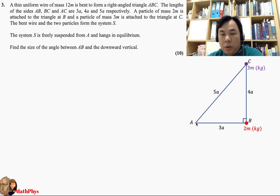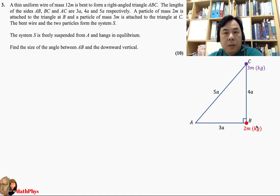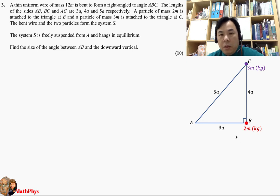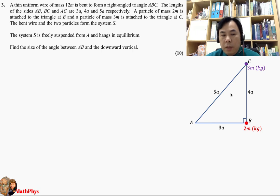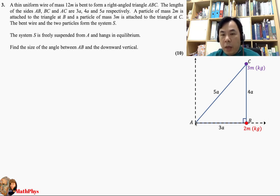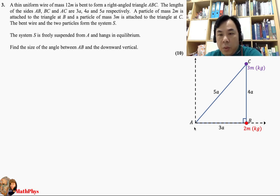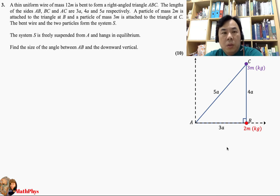If you draw your triangle in this orientation — ABC counterclockwise — then it should look something like this, with the two masses 3M at C and 2M at B attached accordingly. We need to set up an axis in order to determine the center of mass of system S. We will treat A as the origin, which is convenient for our calculations.